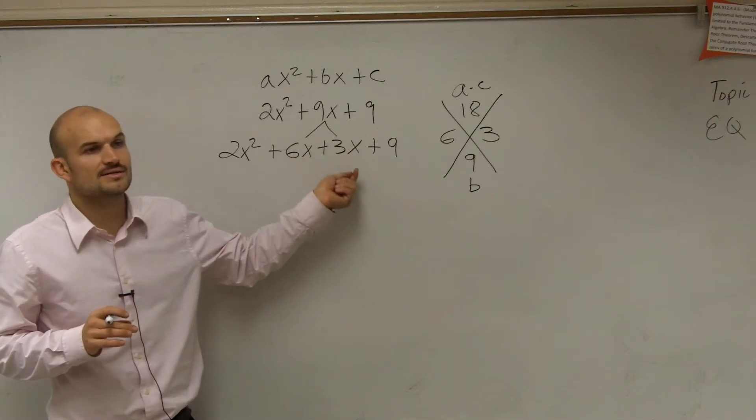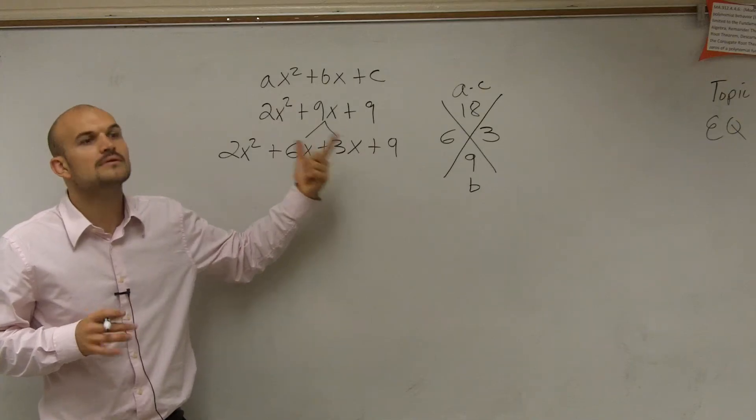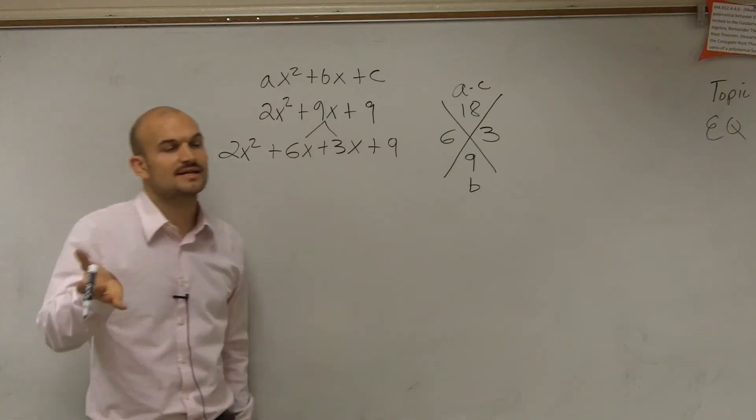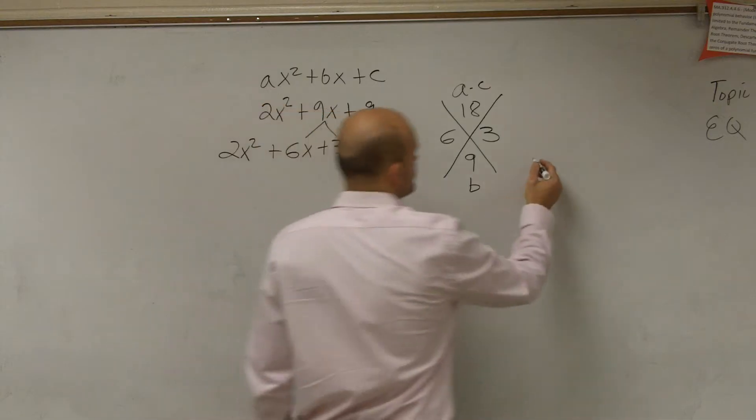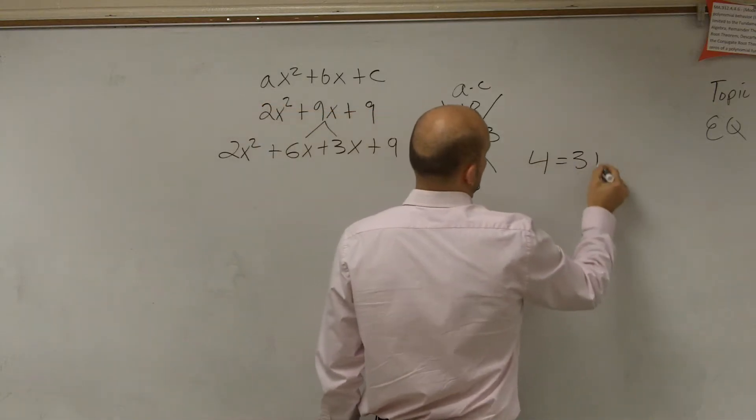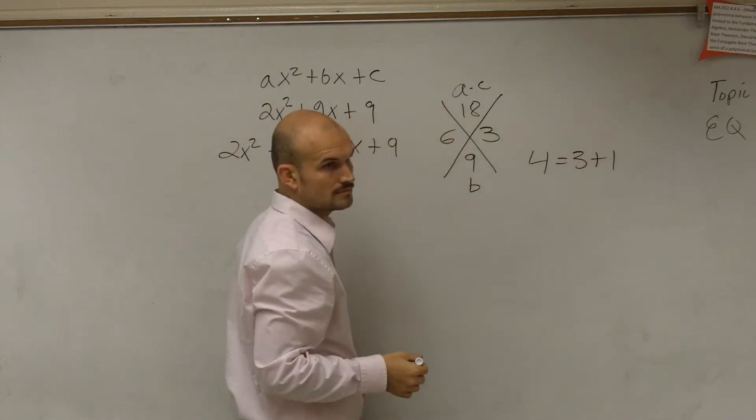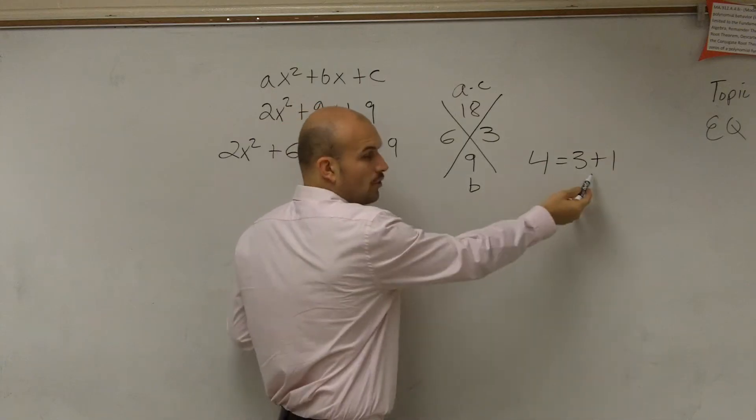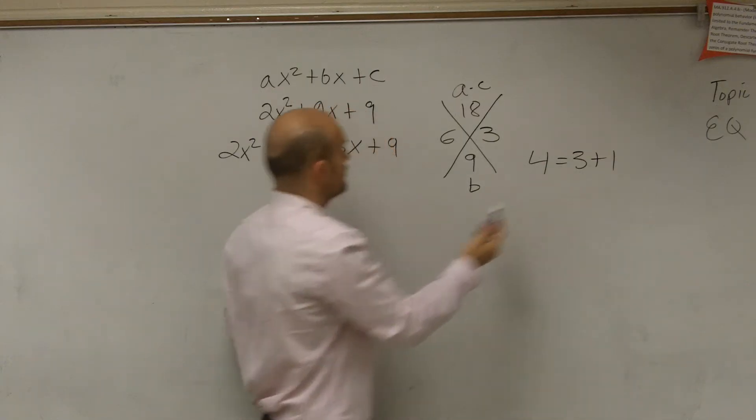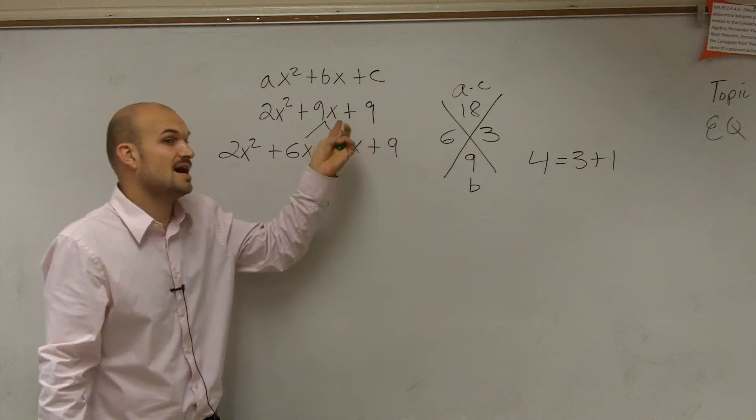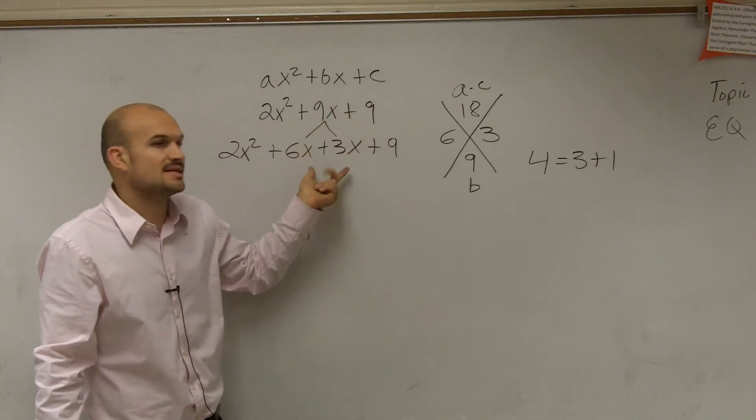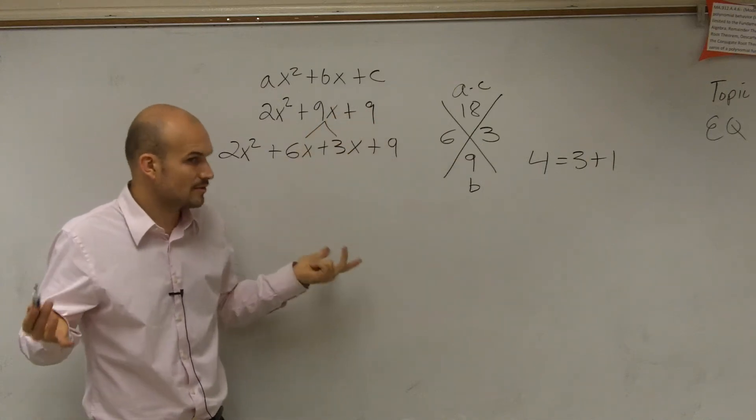But remember, what's 6x plus 3x? 9x. So does it really matter if I use 4 or if I use 3 plus 1? No. So that's the same thing. I'm just going to say, instead of writing 9x, I'm just going to write 6x plus 3x. It's the same thing, right?